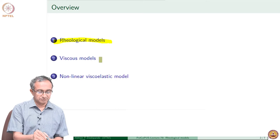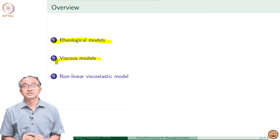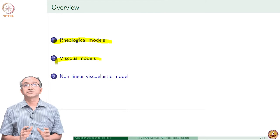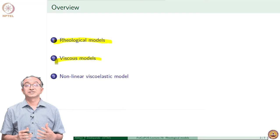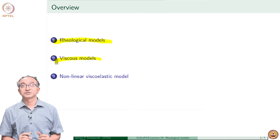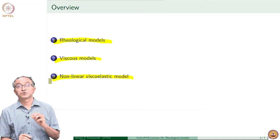We will look at some examples of viscous models, which are the simplest possible models. These have been known for 40-50 years and as a first approximation they can be used at times. However, given the computational power we have these days, and as we discussed, flow simulations and heat transfer simulations have become very important in simulating molding or other processing operations, and we therefore use a lot of complicated models.